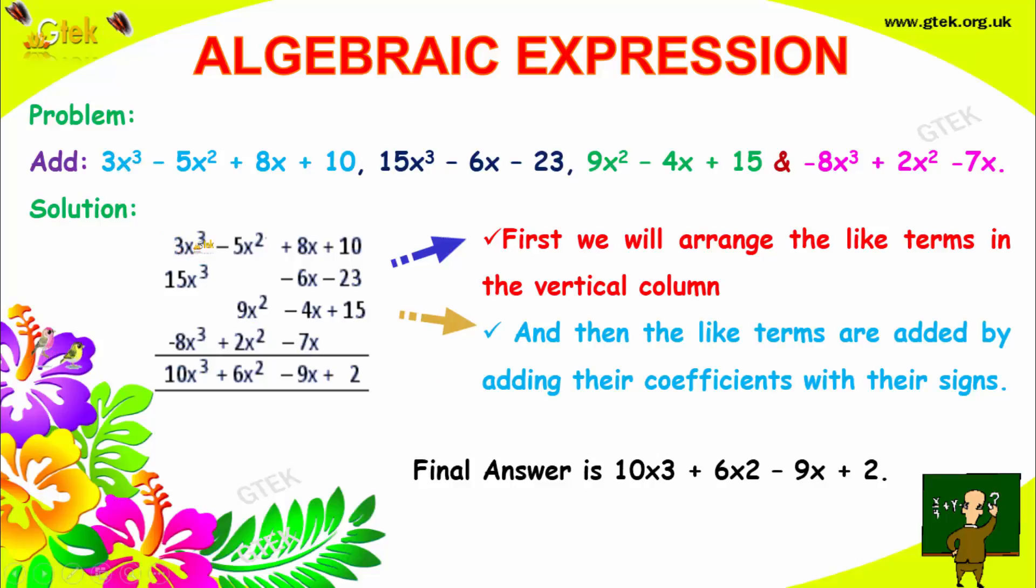3x³ minus 5x² plus 8x plus 10. Now we got 15x³, so x³ is here, we put 15 here. We don't have x², so we got minus 6x, we put it here. Minus 23, we put it here. Now once again we got another term: 9x², so x² is here, we have to put here. Minus 4x here, minus 4x. Plus 15, we got plus 15 here.